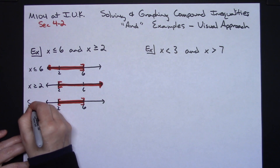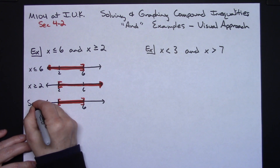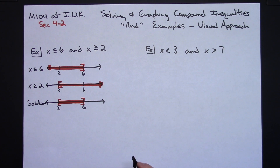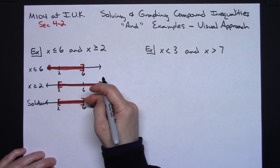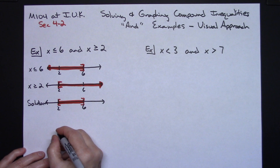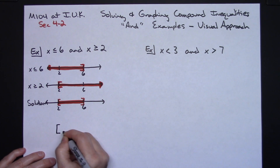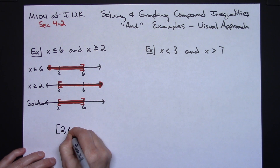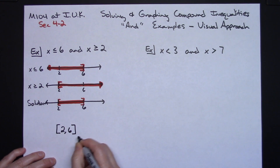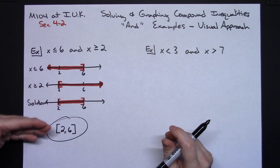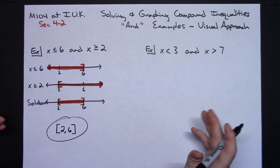From this visual number line approach, if I want to write the solution in interval notation it's easy to read right off the number line: square bracket 2 to 6 square bracket, i.e., [2, 6]. You're looking at your number lines and seeing what part overlaps.